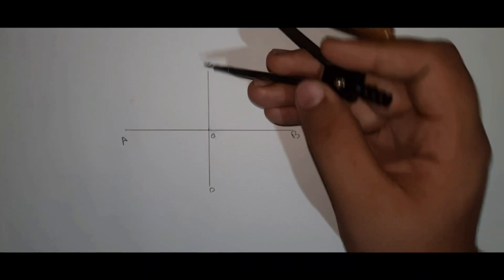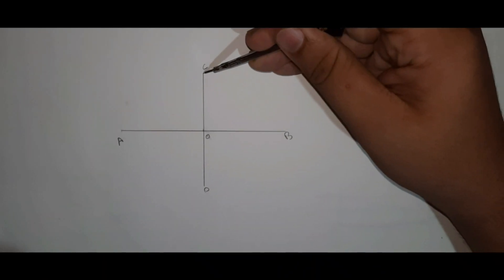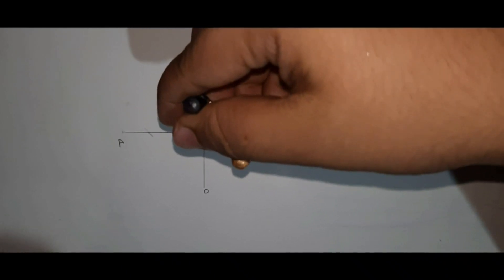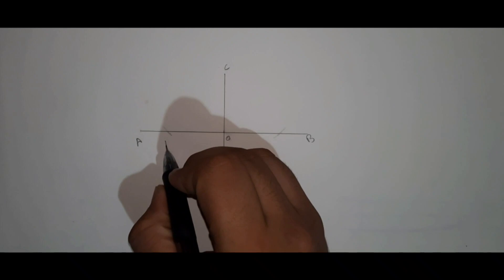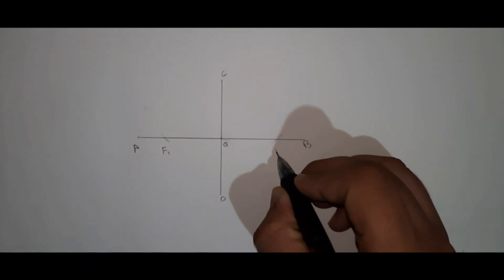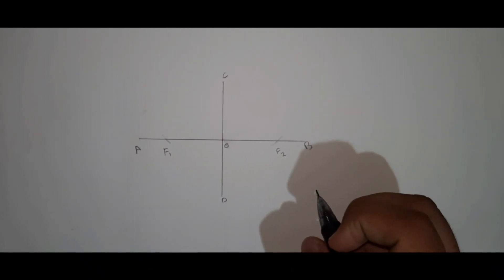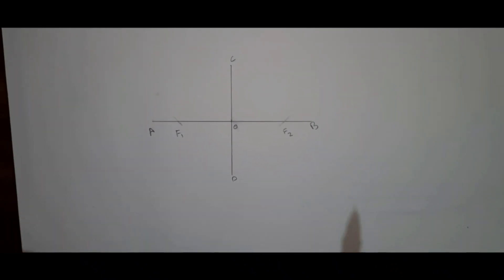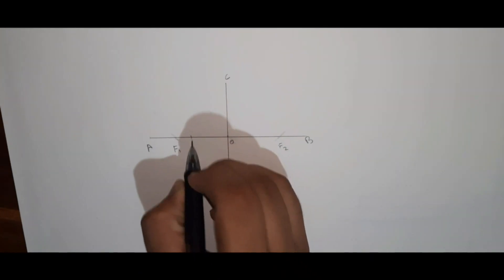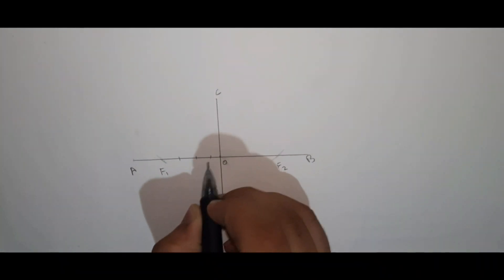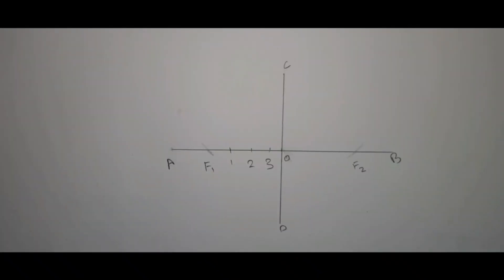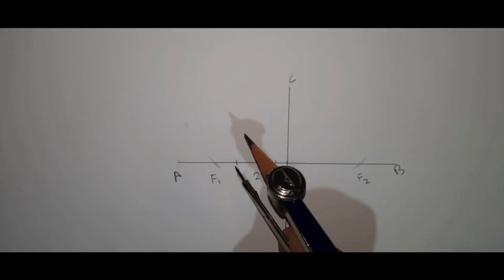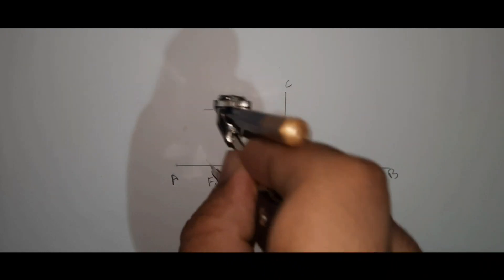Draw another line CD of 7cm — 3.5cm above and 3.5cm below, bisecting line AB. With center C and half AB as radius, cut OA from C and OB. Mark these as F1 and F2 — F1 and F2 are the foci of the ellipse. Mark 3 points on OF1: 1, 2, and 3. Taking F1 and F2 as center and A1 as radius, make 4 arcs.